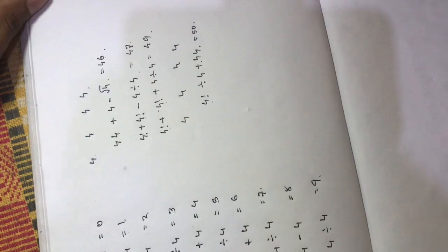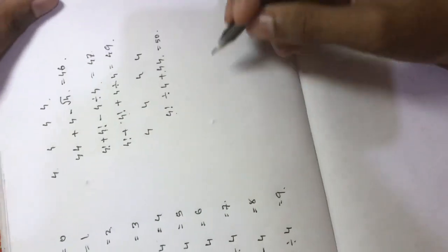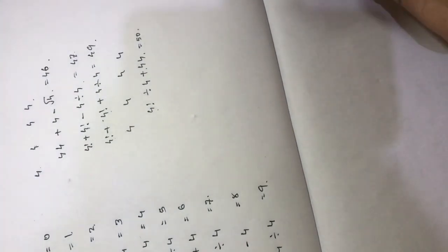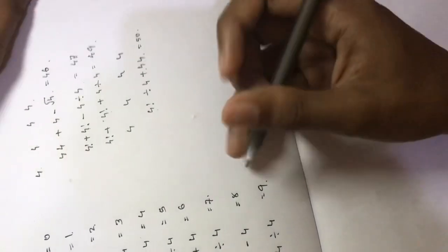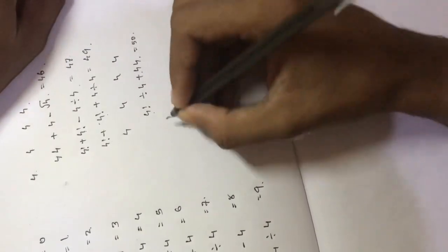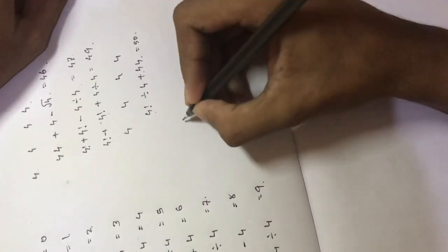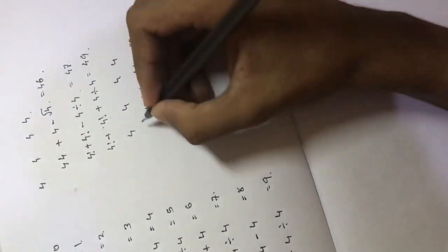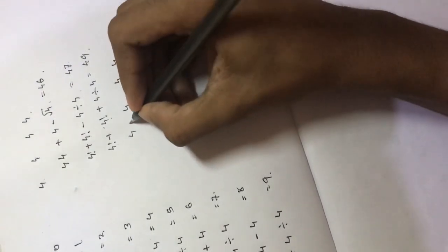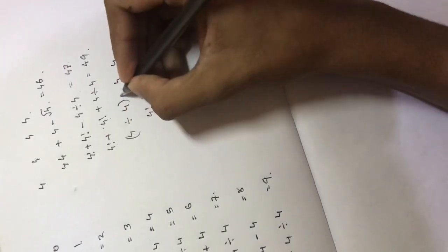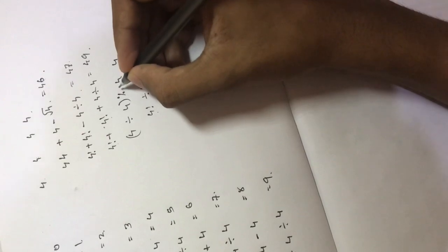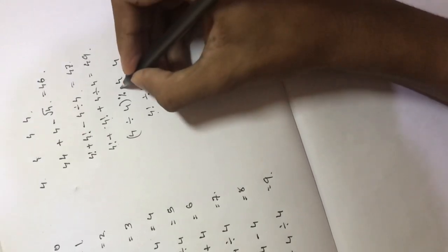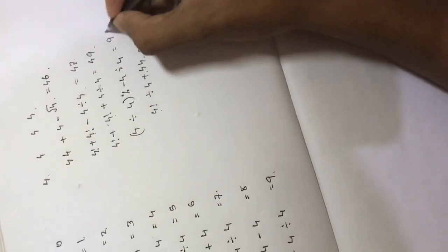I want to make the value of 99 using this symbol with four 4s. I will show you the example: 4 divided by 4 is equal to 1. 100 minus 4 by 4 is equal to 1. 100 minus 1 is 99.